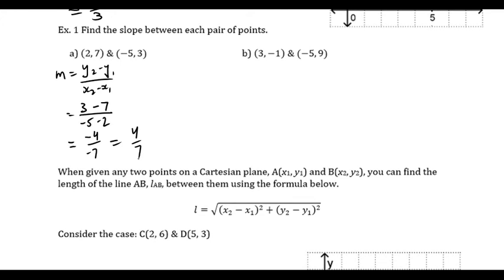I got four over seven for the first one — is that what other people got? The way I did it, I got a negative over a negative, which gives a positive. If you got negative four over seven, you either flipped the points or got a sign wrong somewhere. Be careful — as you saw in the last unit, a negative sign can throw everything off. If you get a negative sign wrong calculating slopes, the whole problem is going to fall apart.